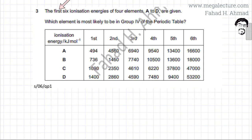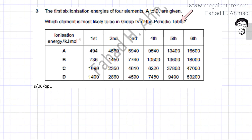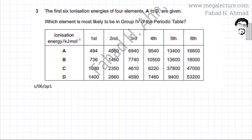The question gives the first six ionization energies of four elements A to D, and asks which element is most likely to be in group four of the periodic table. The first, second, third, fourth, fifth, and sixth successive ionization energies of elements A, B, C, and D are given, and we need to figure out which element is in group four.